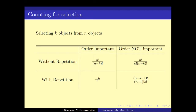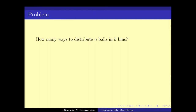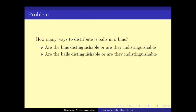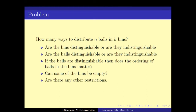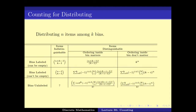Another important question is how to distribute n balls into k bins. There are a few things to consider: are the bins distinguishable or labeled? Are the balls distinguishable? If the balls are distinguishable, does the ordering of balls in the bins matter? Can the bins be empty, and are there any other restrictions? For at least the first four such restrictions, we looked at all possible cases and got a particular matrix.